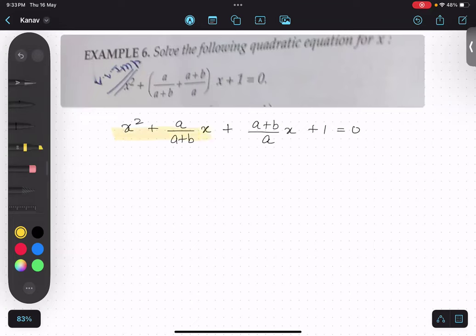Now, what is common in first 2? What is common in first 2? It's x common. So, x plus a upon a plus b.